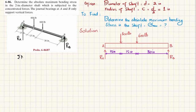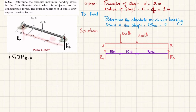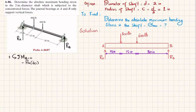Let's find R_A and R_B using the equations of equilibrium. The first equation is: the sum of all moments about point B equals zero, taking counterclockwise moments as positive. About point B, the first moment is due to R_A with a perpendicular distance of 60, producing a clockwise moment, so it will be negative: minus R_A times 60.